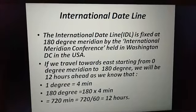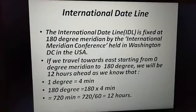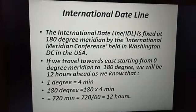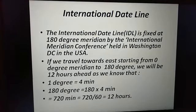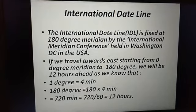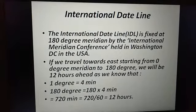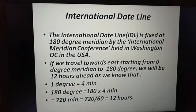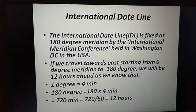Hello students. In the previous video we studied till time zones. Today we will start with the international date line. The international date line is fixed at the 180 degree meridian by the international meridian conference held in Washington DC, USA.